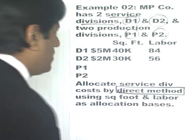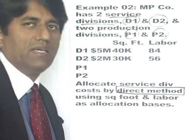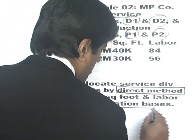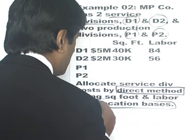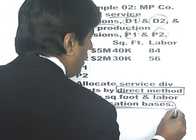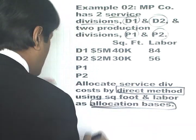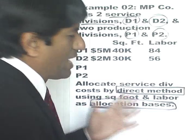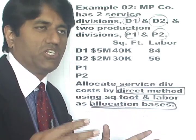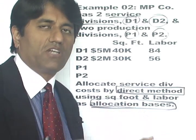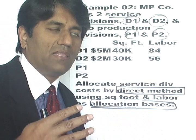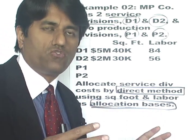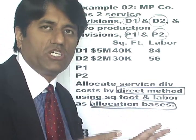What is the direct method? In the direct method you have something called an allocation base or allocation basis. The allocation basis says: look at some particular feature of the production division and assign costs in proportion to that feature. I'll explain with this example what happens.